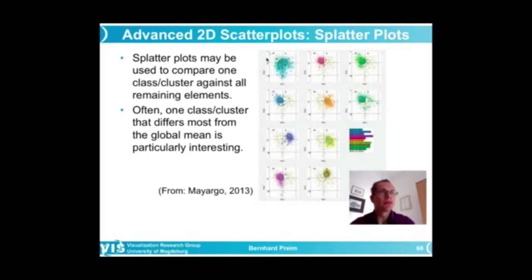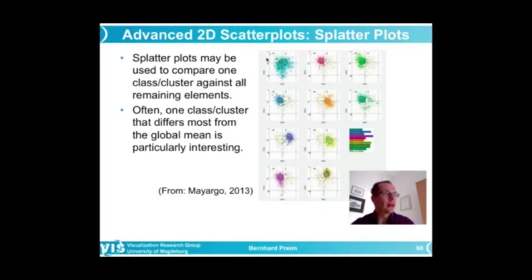The shapes were nicely smoothed in order to emphasize their general shape and not distract the viewer with details. The last remark here was that this can also be used to compare one cluster to the overall distribution, so often it's quite interesting to see whether there is one class or cluster that strongly depends on the overall behavior. That could be particularly interesting.